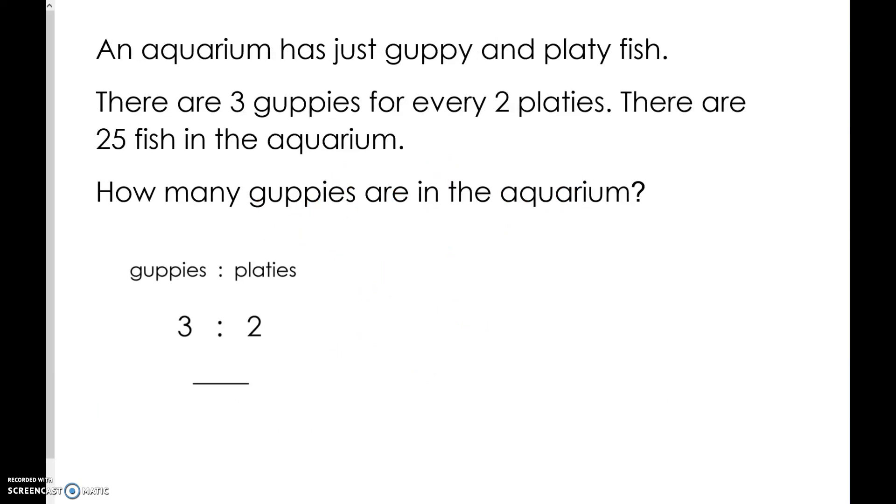Let's consider this problem. An aquarium has just guppy and platy fish. There are 3 guppies for every 2 platies. There are 25 fish in the aquarium. How many guppies are in the aquarium? We know that 25 is our total number. If there are 3 guppies and 2 platies, the total number of fish is 5.